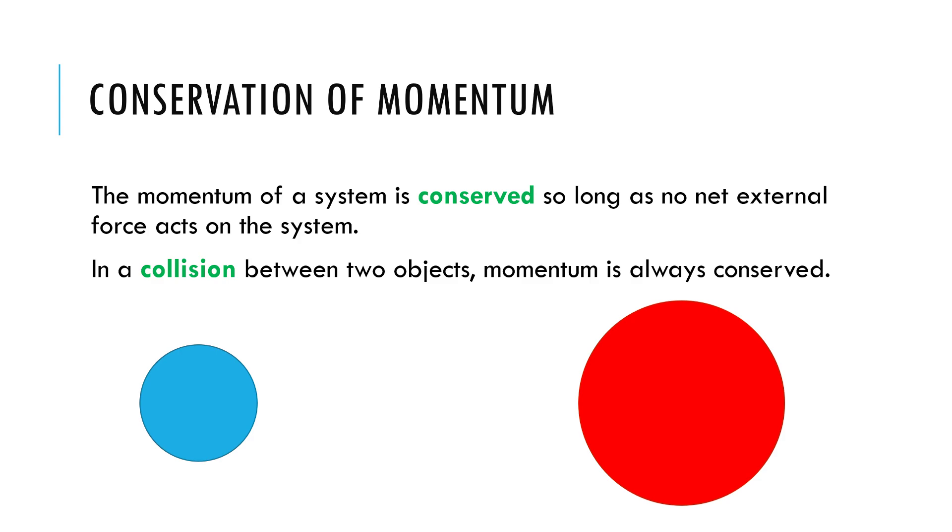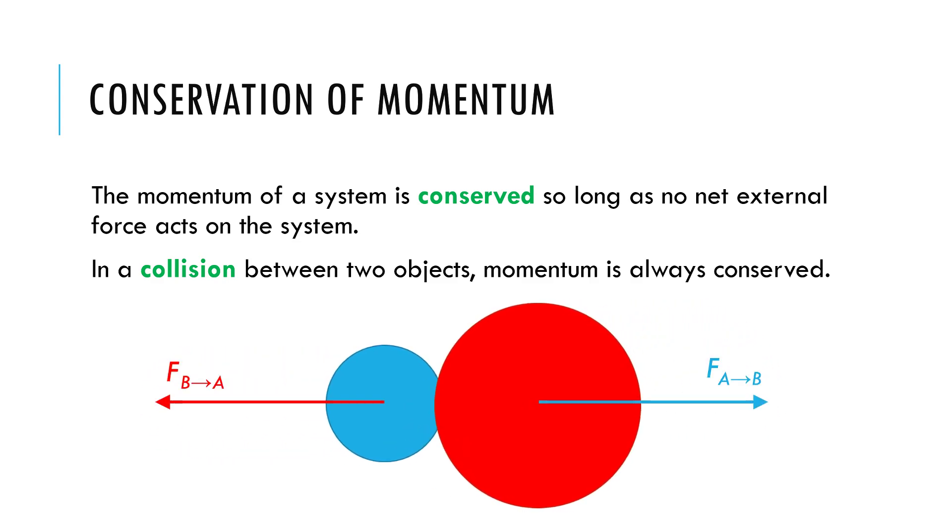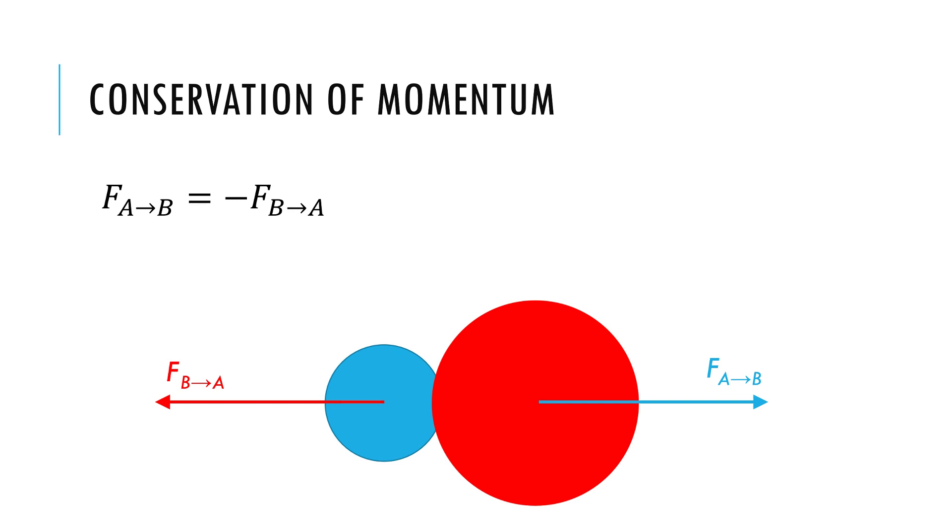So if two objects collide, there are no net external forces because the only forces we have are internal. These two objects will smash into each other and as they do, they exert forces on each other. We know from Newton's third law those are equal and opposite forces. The force of A on B equals the force of B on A. But these are the only forces that we're dealing with in a collision, these internal forces. We're assuming no forces outside of the system.